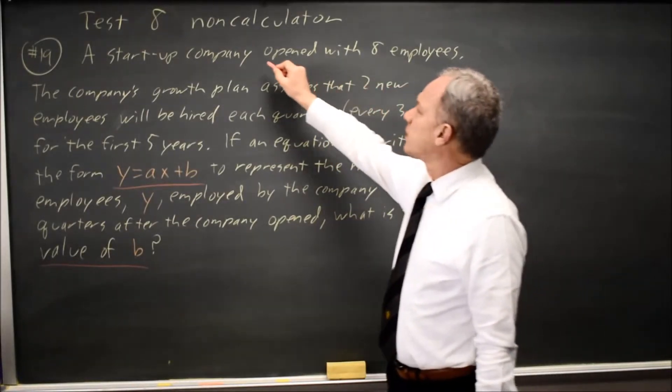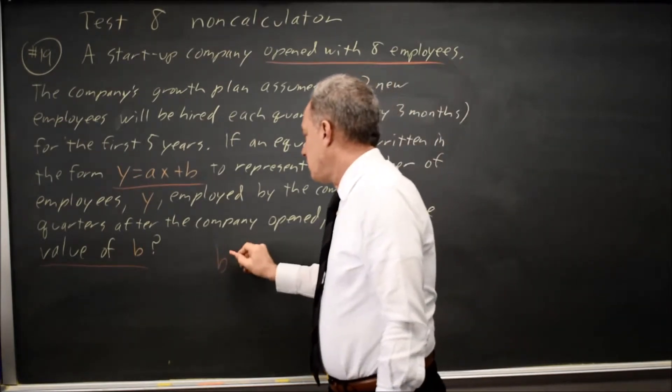And in context, the company opened with 8 employees, so B equals 8.